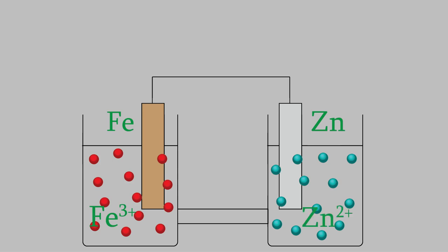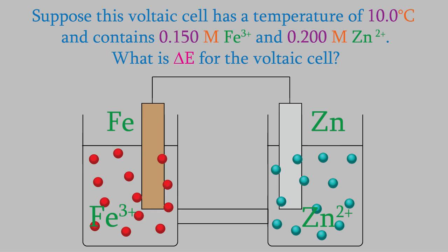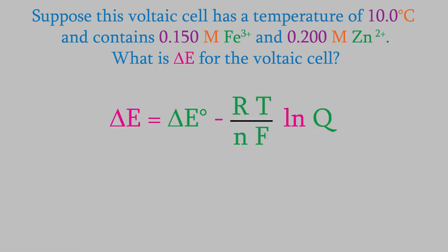The temperature is 10.0 degrees Celsius, and the concentrations are 0.150 molar for the iron and 0.200 molar for the zinc. What will be the voltage for this voltaic cell? To find out, we'll use the Nernst equation.